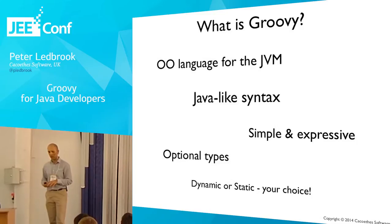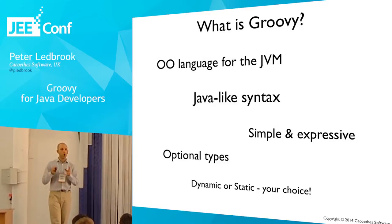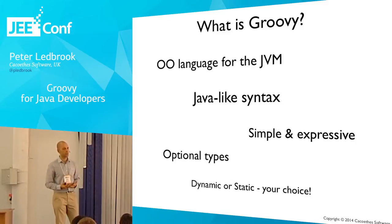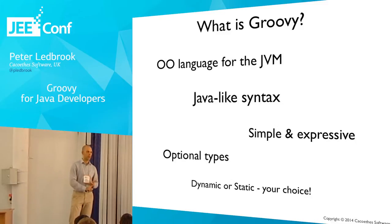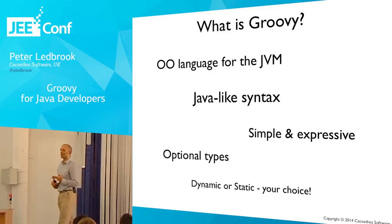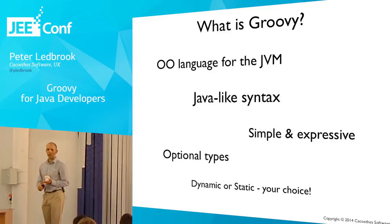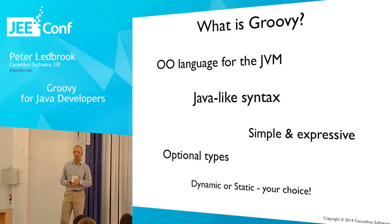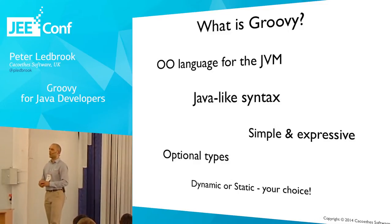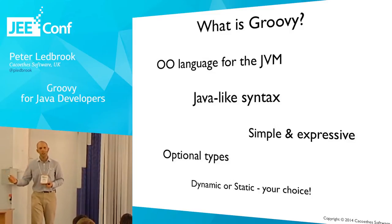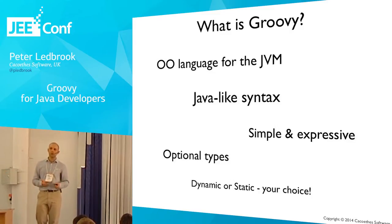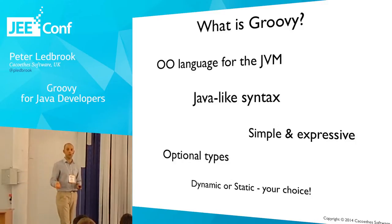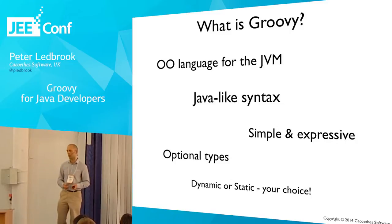It's an object-oriented language for the JVM. It has a Java-like syntax. It's simple and expressive. You're going to see examples of what I mean by that. If you've taken the time to look at Java 8 and the Lambda functions, you'll already have some idea of how concise and expressive code can be. More interestingly, it has optional types. In fact, you have the choice to use dynamic typing or actually have compile-time errors in your code. This came with Groovy 2.0.